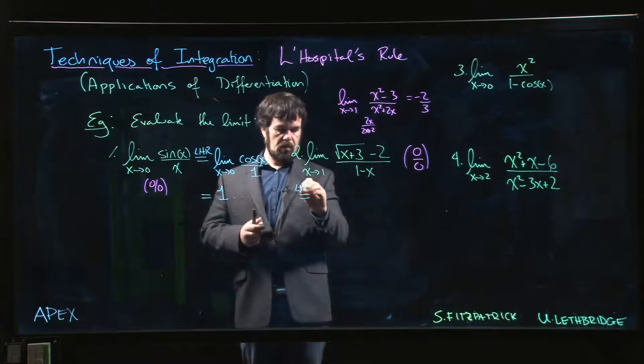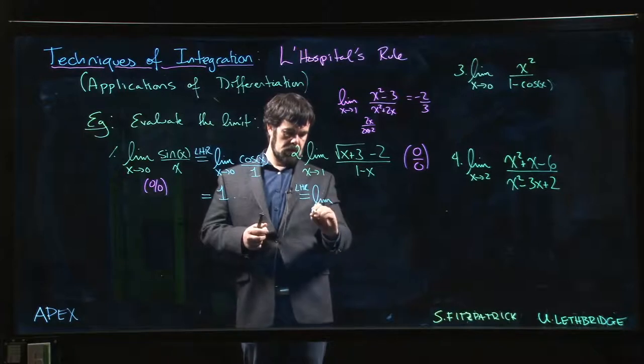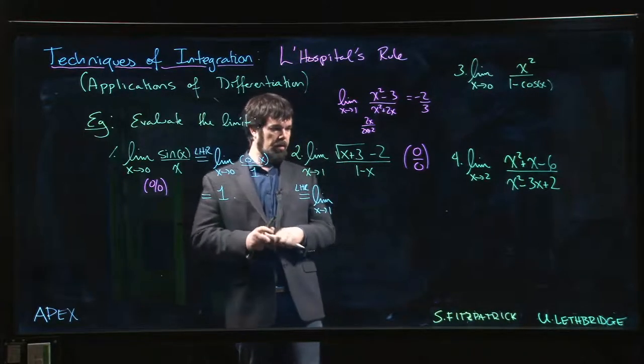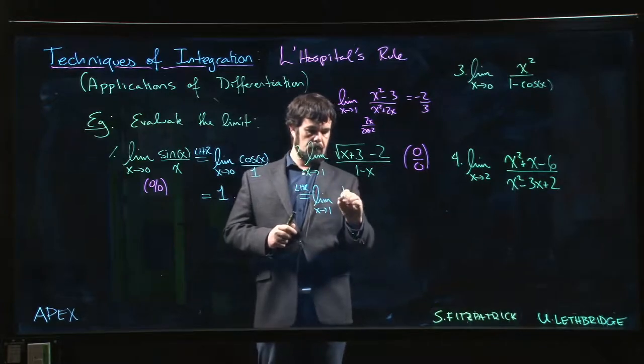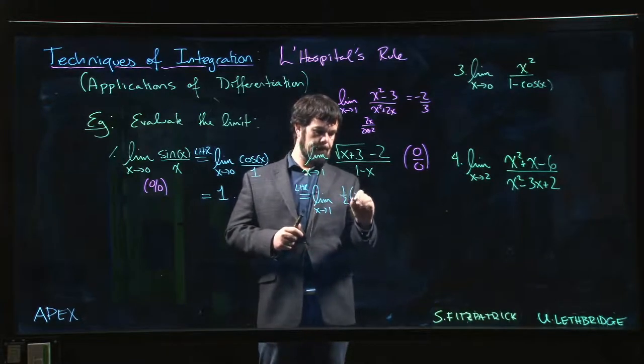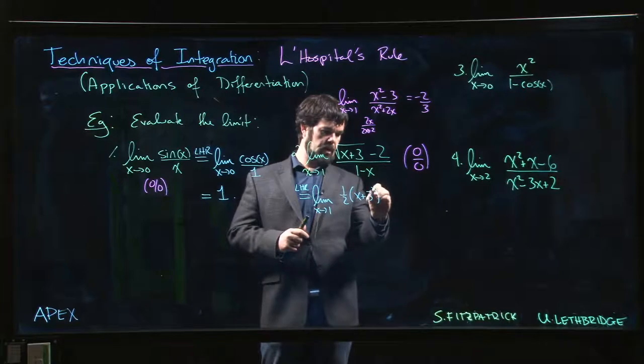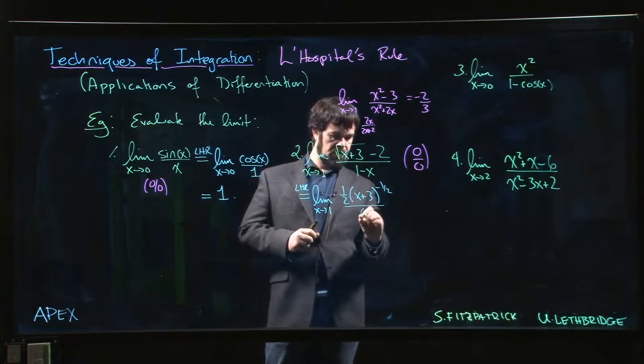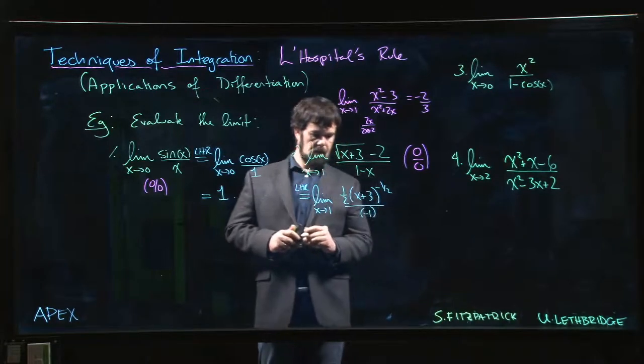So using L'Hopital's rule, we get the limit as x approaches 1. So on the top we have x plus 3 to the minus 1 half. On the bottom, the derivative is just minus 1.